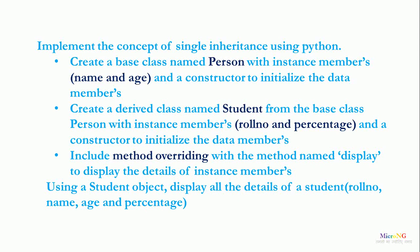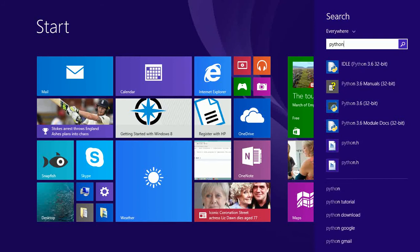This tutorial discusses a Python program to implement the concept of single level inheritance. We have to create a base class named Person with two instance members name and age and a constructor to initialize its data members. From the class Person we derive a class named Student with two instance members role number and percentage and a constructor to initialize its data members. Using a student object we display all details: role number, name, age, and percentage — where role number and percentage come from the Student class and name and age come from the Person class.